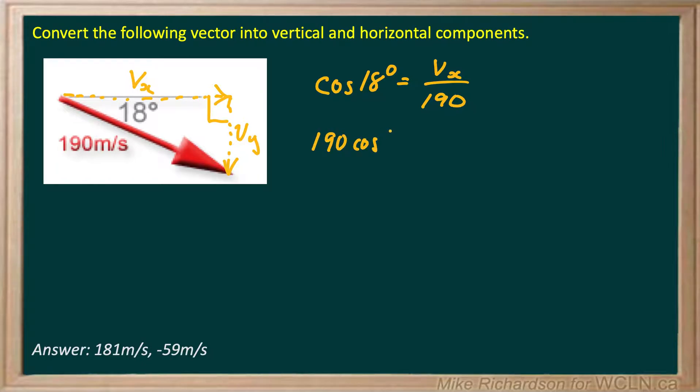190 cos 18 is equal to vx. Make sure your calculator is in degree mode, and you end up getting 180.7 meters per second. And it's to the right, so it'll be positive.